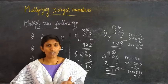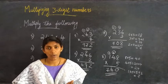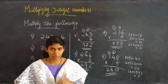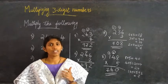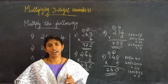That means to multiply a three-digit number by a one-digit number, first we have to multiply the ones, then the tens, and followed by the hundreds.